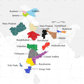Alternatively, a joint state for both Kutch and Saurashtra is advocated.